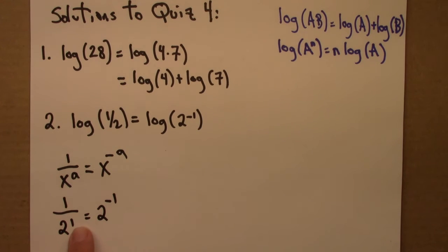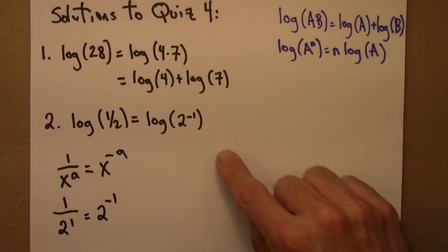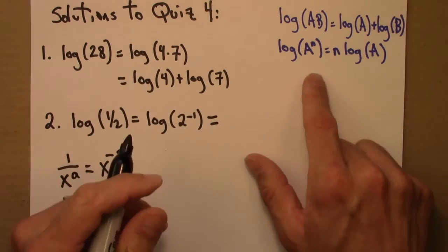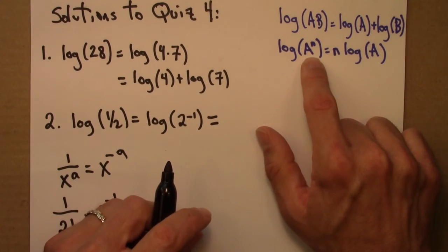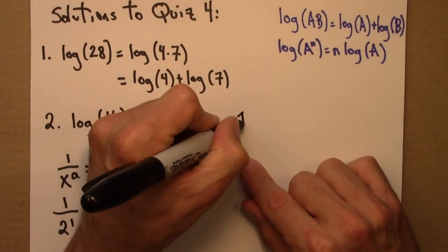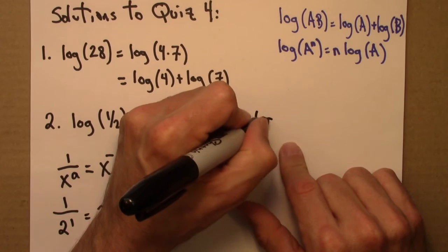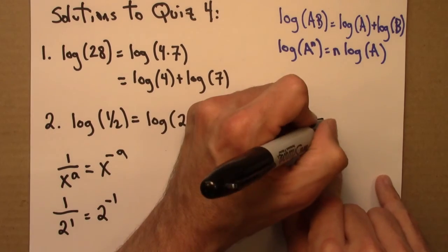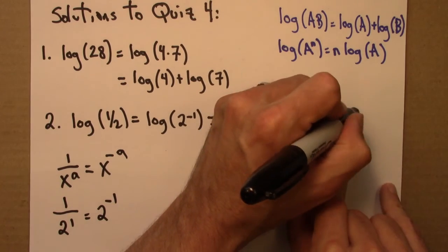Remember that 2 to the 1 is the same thing as 2. Alright, so log 2 to the minus 1. Now I can use the exponent property for logs. a is 2, n is minus 1. This is minus 1 log 2, or just minus log of 2.